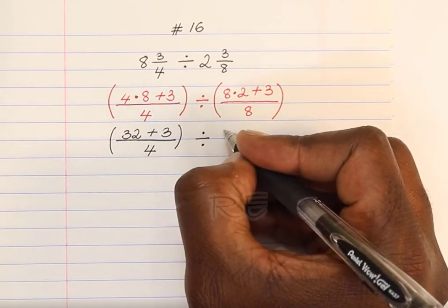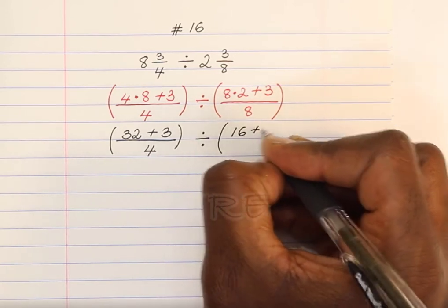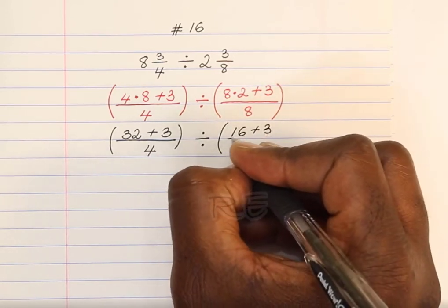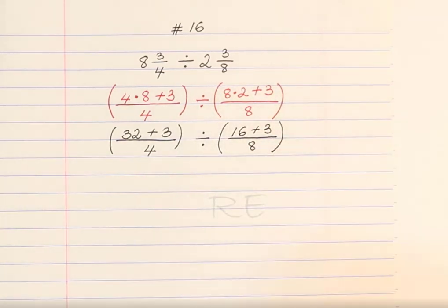Divided by 8 times 2 is 16. 16 plus 3 divided by 8, between parenthesis.